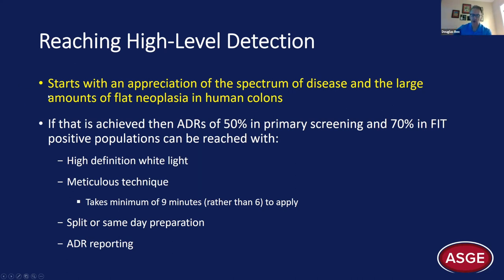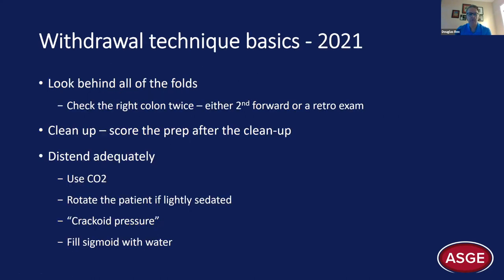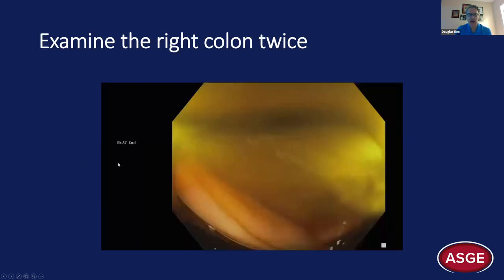To achieve very high-level detection, you have to come to the procedure with a sense of what flat disease looks like. You can reach very high detection levels with just the basics: good equipment — specifically a high-definition scope with white light — combined with meticulous technique. You also need split or same-day preparations, where the patient takes half or all the prep on the day of the procedure. Just measuring and reporting ADR to endoscopists will generally cause improvement.